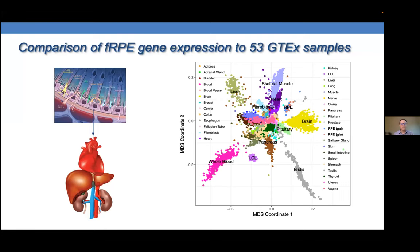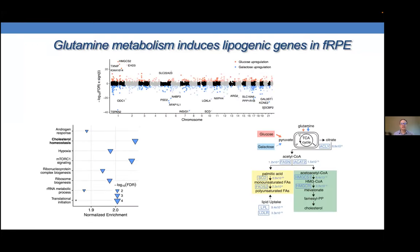We also wanted to get information from our two metabolic conditions and did differential gene expression analysis, seeing a significant number of genes upregulated in the galactose condition — indicating it is more of a stress on the cell than glucose. Gene ontology analysis of these genes showed that cholesterol homeostasis is a significantly enriched pathway, as is mTORC1 signaling.